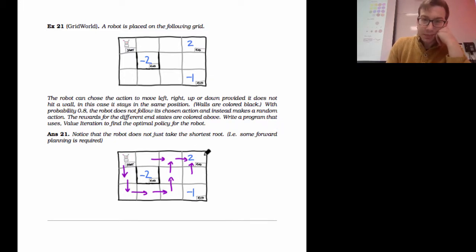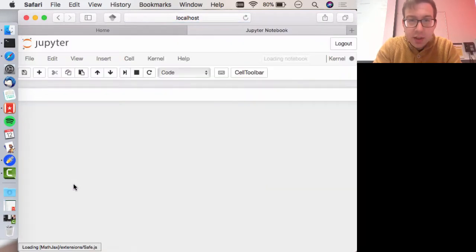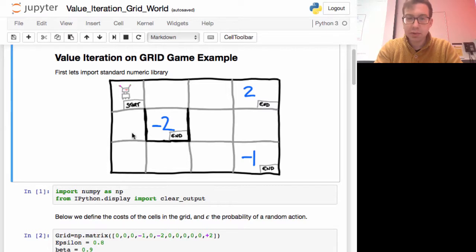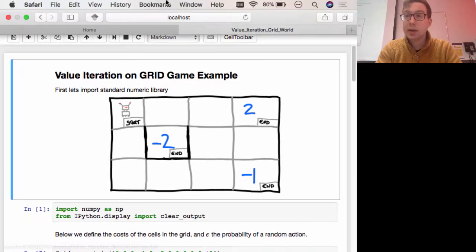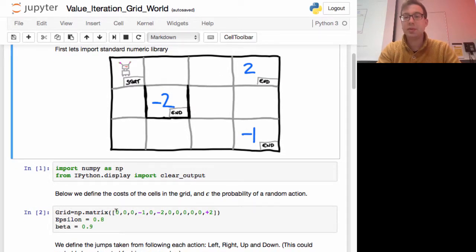So what we can do is apply the idea of value iteration to this. Here's value iteration on grid example. Here's the robot, there's the rewards. Just quickly walk you through what we've done here. I downloaded some things to deal with numbers. Then here, I've defined the values of all the different points, the final values of all the different points on the grid. These are the rewards - the reward of minus 1 for here, the reward of minus 2 for this one, and this gives me the reward of plus 2 for this one. Then I define epsilon to be 0.8, the probability that disobeys the rules, and 0.9 as the discount factor in the Markov decision process.